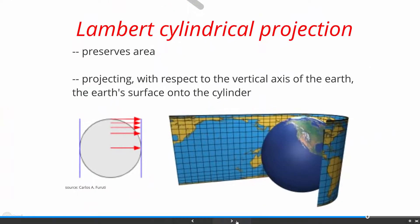The third kind of map is called Lambert cylindrical projection. It was developed by the Swiss mathematician Johann Heinrich Lambert. This projection preserves the area on the map. It projects the Earth's surface onto a cylinder with respect to the vertical axis of the Earth, as shown in the figure.